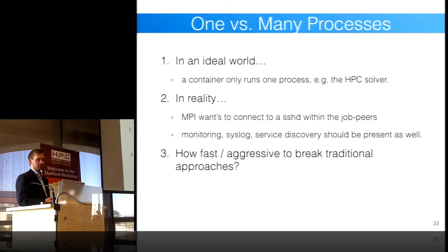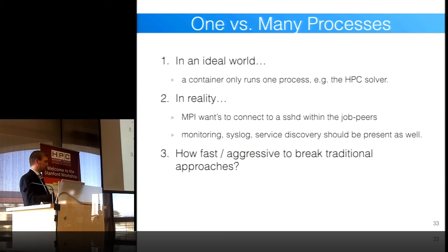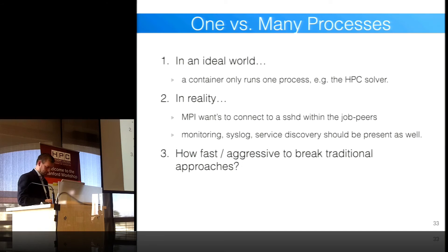Another area to explore is one versus many processes per container. Ideally a container runs one process, but for MPI jobs or Slurm you need at least a Slurm daemon and an SSH daemon — so you need a tiny init system to start multiple services. It would be nice if mpirun could start remote processes via Docker exec rather than SSH, but that's something we need to explore. The question is also how aggressively we want to move away from the traditional SSH-everywhere approach.